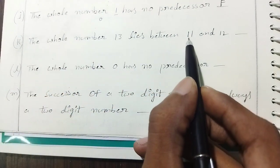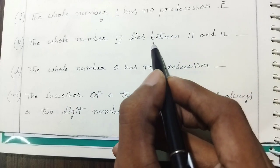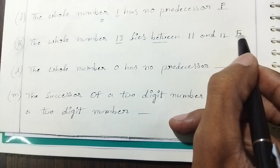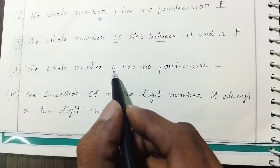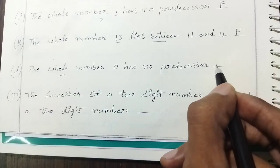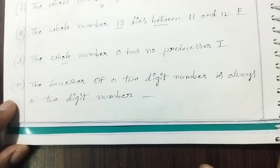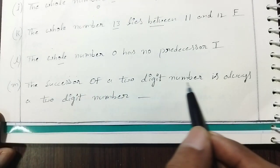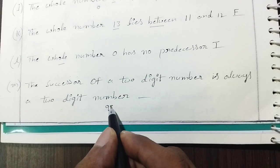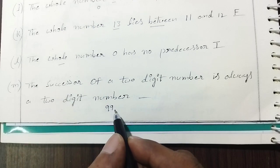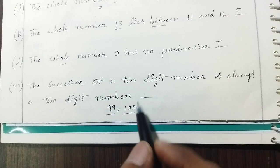Next: 'The whole number 13 lies between 11 and 12.' This is false. The whole number 0 has no predecessor — this is true. The successor of a 2-digit number is always a 2-digit number — this is false, because the successor of 99 is 100, which is a 3-digit number. So this is false.